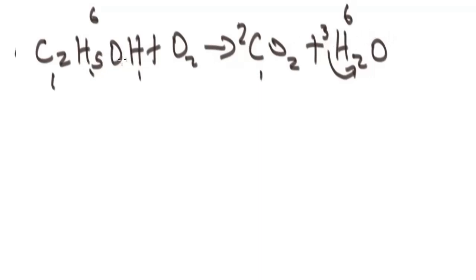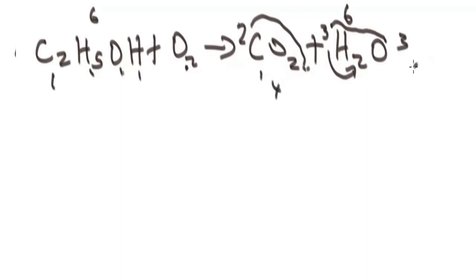Let's check oxygen. At the left, we have 3 atoms of oxygen — this 2 plus this 1 here gives us 3. At the right, remember this 3 we added also multiplies the oxygen, meaning we have 3 plus these 2 multiplying the oxygen at the base, making it 4. That is a total of 4 plus 3 — 7 for oxygen. So oxygen is not balanced. Since we have 7 atoms of oxygen at the right, let's balance the left by multiplying the O₂ here. So 3 times 2 is 6, plus 1 is 7.